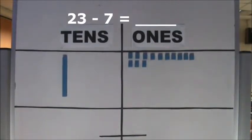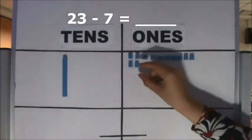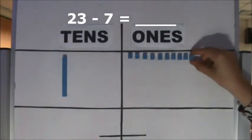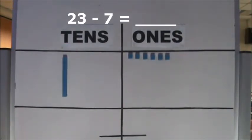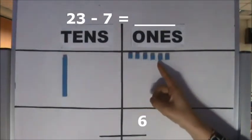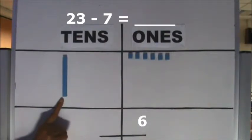Now we have enough ones to take away 7 ones. Take away 7 ones from 13 ones — take away 1, 2, 3, 4, 5, 6, 7. How many ones do we have left? We have 6 ones left.